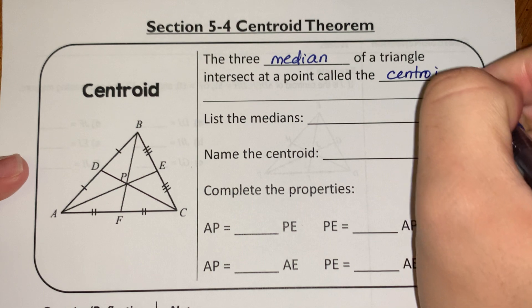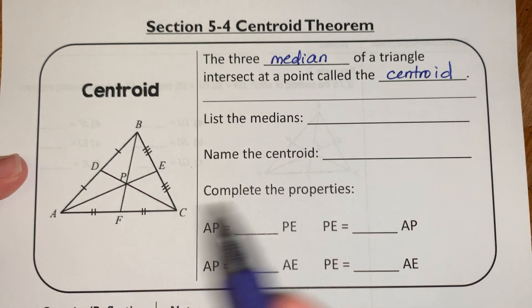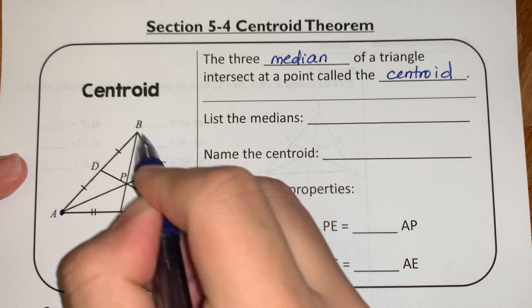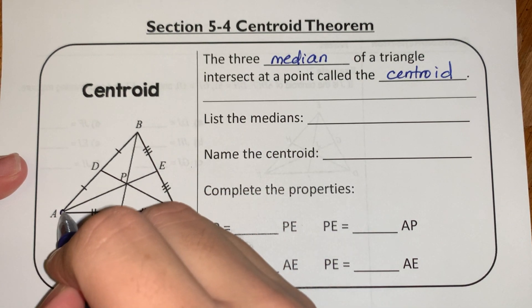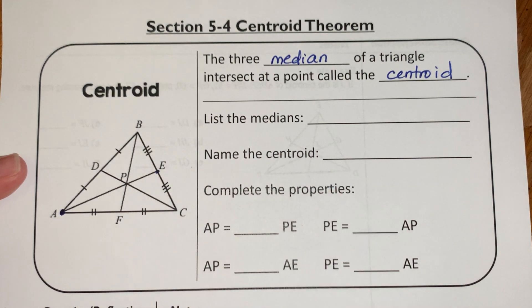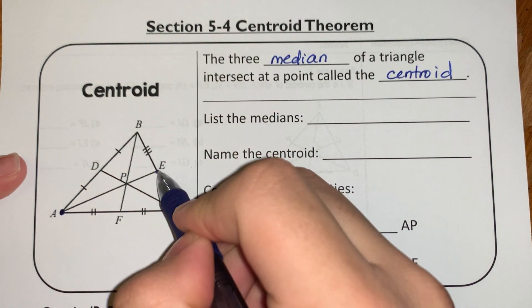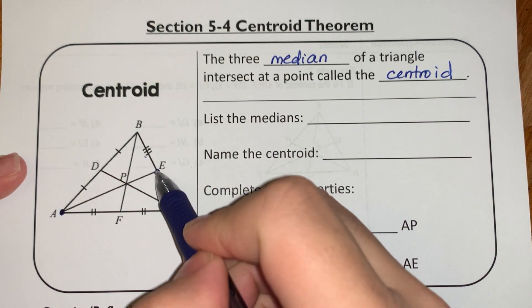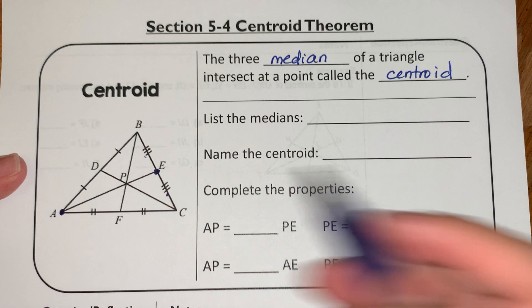So before I actually get into it, let's remember what a median is. A median in a triangle is essentially created by connecting the vertex to the middle of the opposite side of that triangle. So here's the vertex. If I look at this side of the triangle and I cut it right down the middle, you'll see I have these two equal parts. That's the middle. If I connect my vertex to that middle part over there, then that gives me the median.